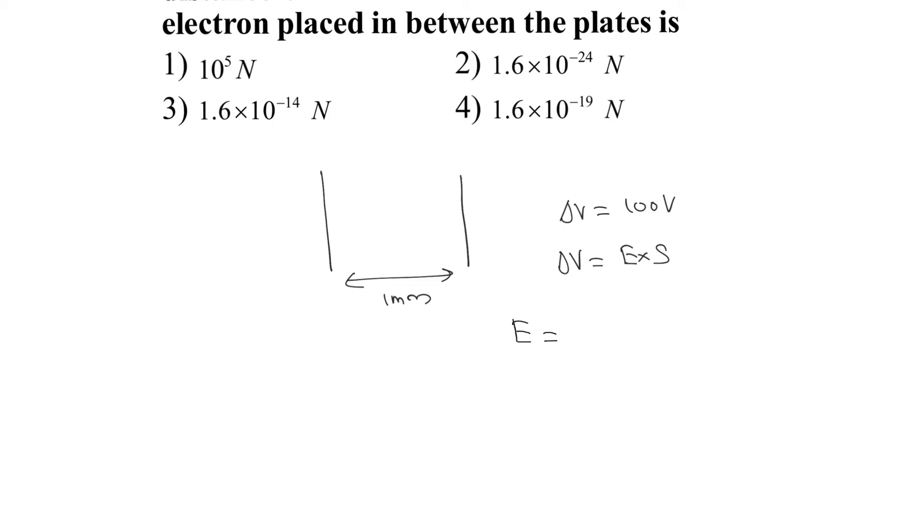Let's say the left plate is at high potential and right plate is at low potential. So there will be an electric field from left to right. This electric field is always in the direction of lower potential.